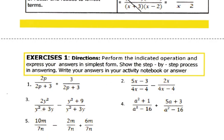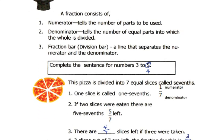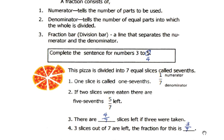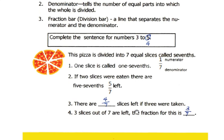Move on to the numeracy scale. We are asked to complete the sentence for numbers 3 and 4. 1 and 2 are given. The pizza is divided into 7 equal slices, called sevenths. Meaning, 1 piece is 1 seventh. Moving on to number 3, there are 4 sevenths slices left if 3 were taken. Because 7 over 7 or 7 sevenths minus 3 that were taken. So, that's 4 sevenths. We have here 3 slices out of 7 are left. So, in effect, the fraction for this is 3 slices out of 7 left. Fraction for that is 3 sevenths.